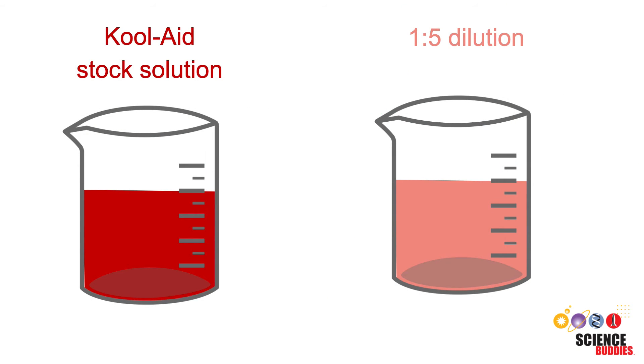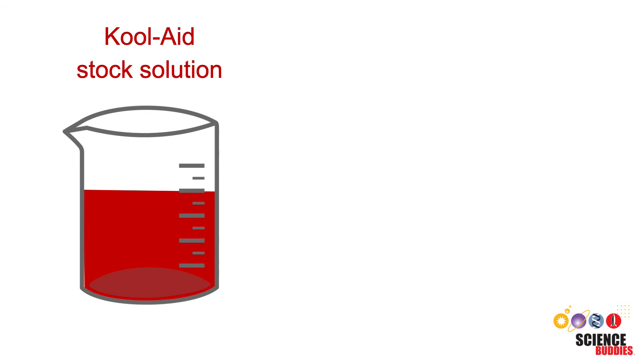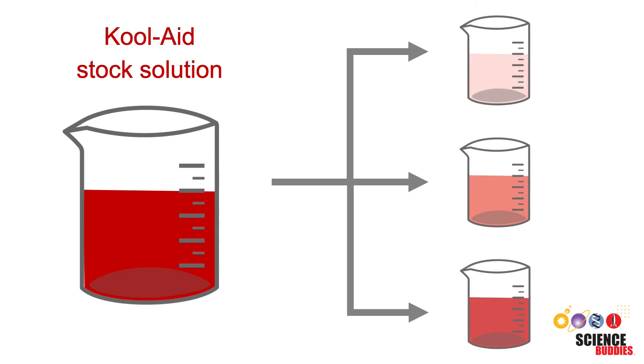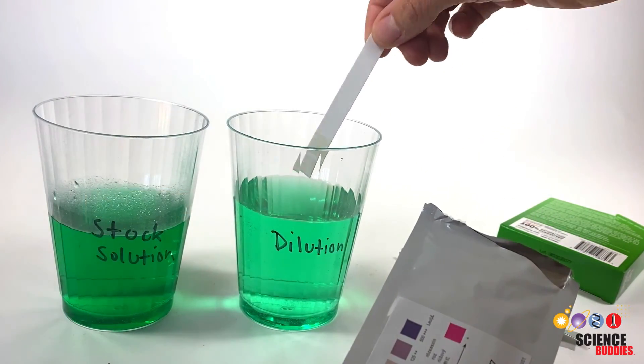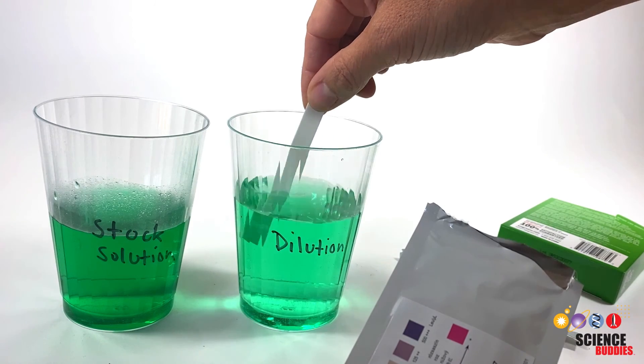A 1 to 5 dilution is also often called a 5-fold dilution, as the solute concentration in the dilution is 5 times less than the original concentration. You can follow the same dilution method to make all kinds of different dilutions. This means you should now be ready to face any dilution challenge that comes up in your science projects.